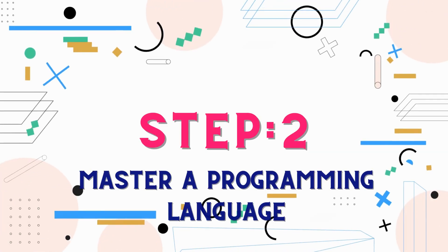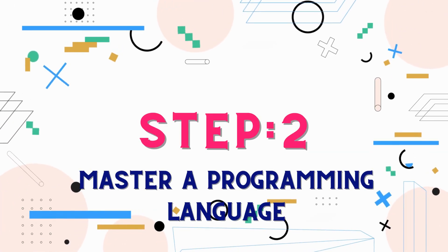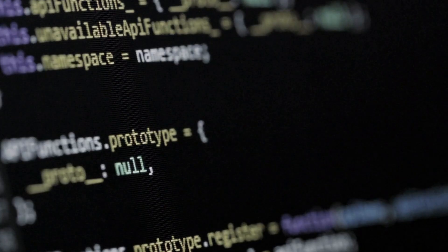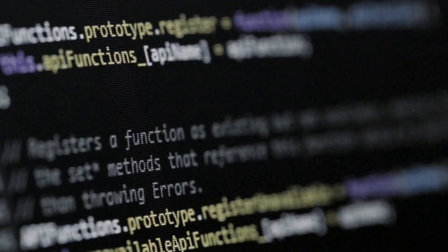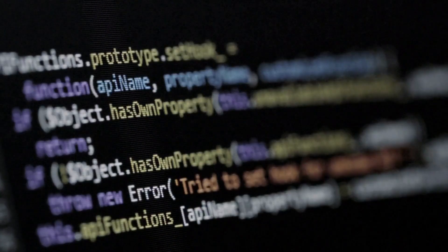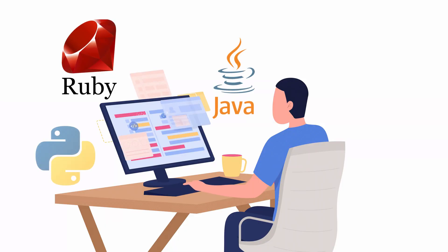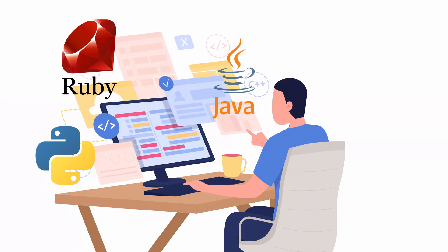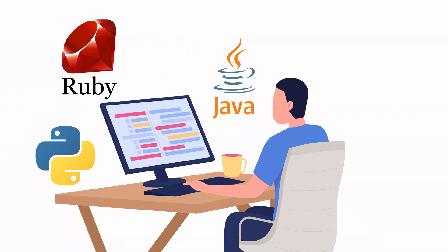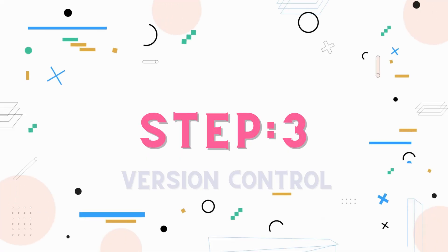Step 2: Be proficient in a programming language. Develop proficiency in a programming language like Python, Ruby, or Java, as automation and scripting are crucial in DevOps.